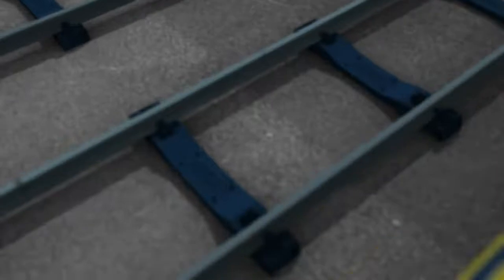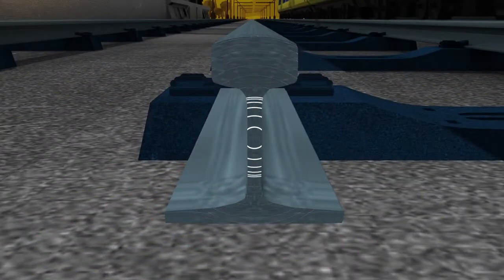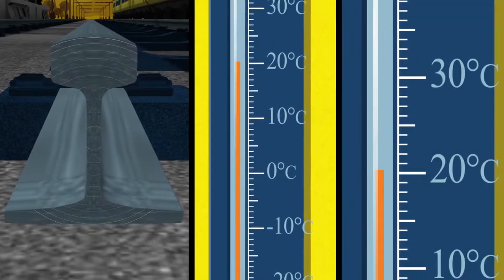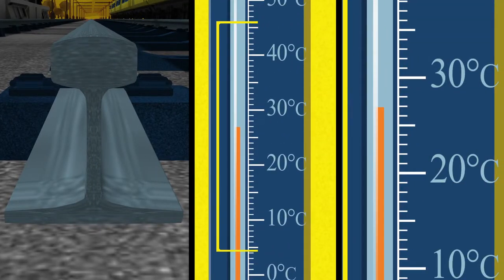Rails are pre-stressed to help them resist the effects of high temperatures. In Britain, our rails have a stress-free temperature of 27 degrees, halfway between the coldest and hottest we expect our rails to get in the UK.